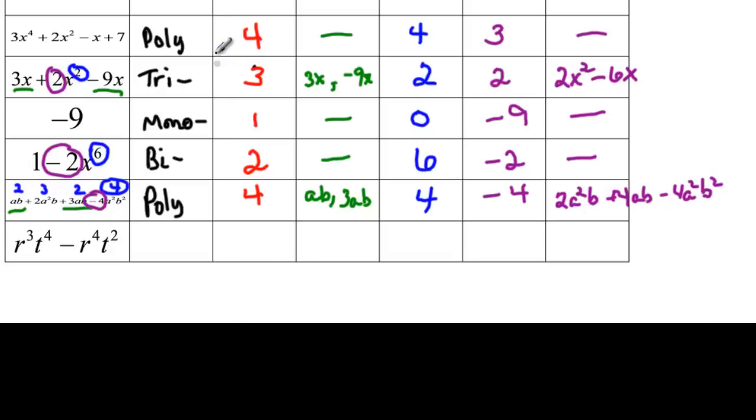And then my final one - it's two terms, so it's a binomial. There are no like terms, and now we have to add our exponents again to find our degree. 3 plus 4 is going to be 7, and 4 plus 2 is going to be 6. 7 is going to be the degree of my polynomial.